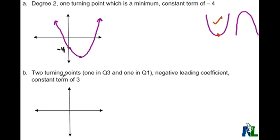The next one says we have two turning points in Q3 and Q1, a negative leading coefficient, and a constant term of 3. So it's really important that we look at the two turning points here. If there's two turning points, that means it's going to be cubic.